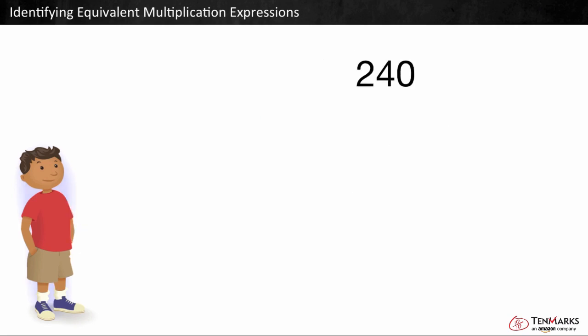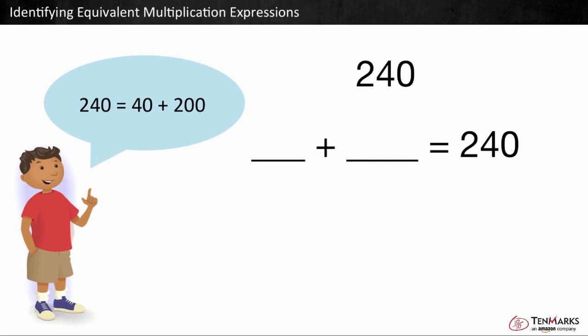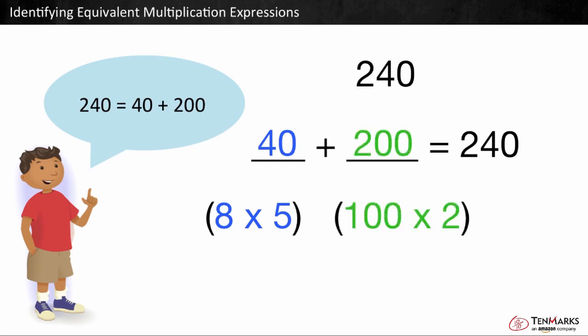We can also use parentheses to get the same product. 240 can be broken up into two addends. It can be broken into 40 plus 200. 40 can be expressed as 8 times 5. And 200 can be expressed as 100 times 2.